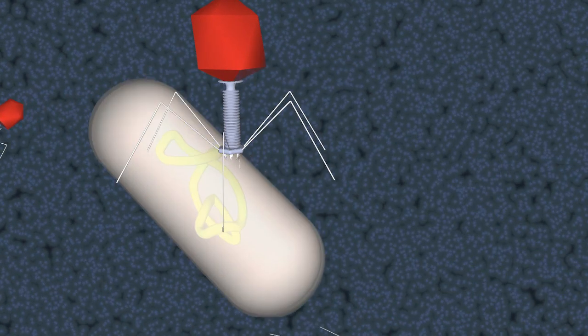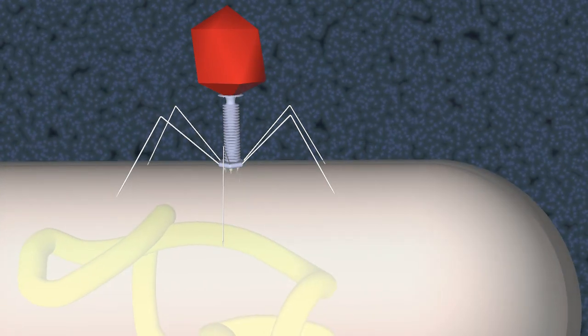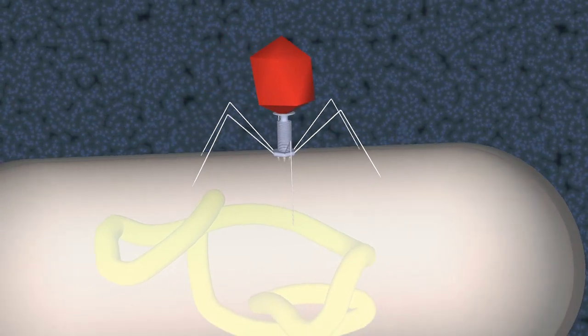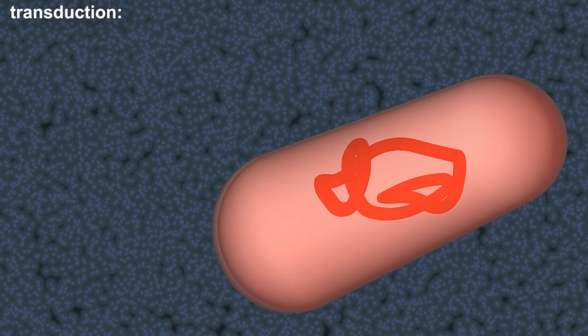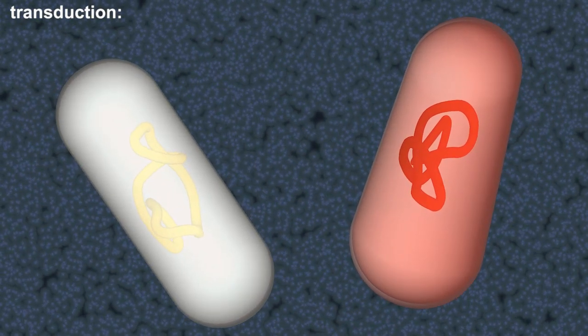If the new phages attach to other bacteria and the DNA becomes incorporated into bacterial DNA, new genetic types of bacteria may be produced. This process, in which bacteriophages assist in the genetic recombination of bacteria, is known as transduction.